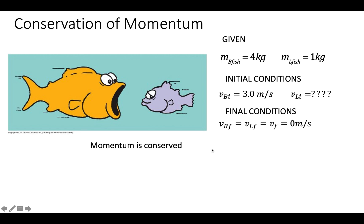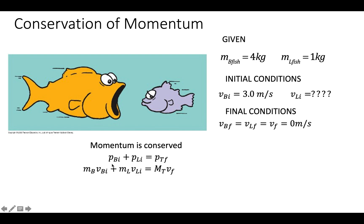We know that momentum is conserved, meaning the total initial momentum must equal the total final momentum. The total initial momentum is the momentum of the big fish plus the momentum of the little fish, and that equals their combined momentum after the collision. The momentum of each fish is its mass times its velocity, and after the collision it's the total mass of both fish multiplied by their combined velocity.